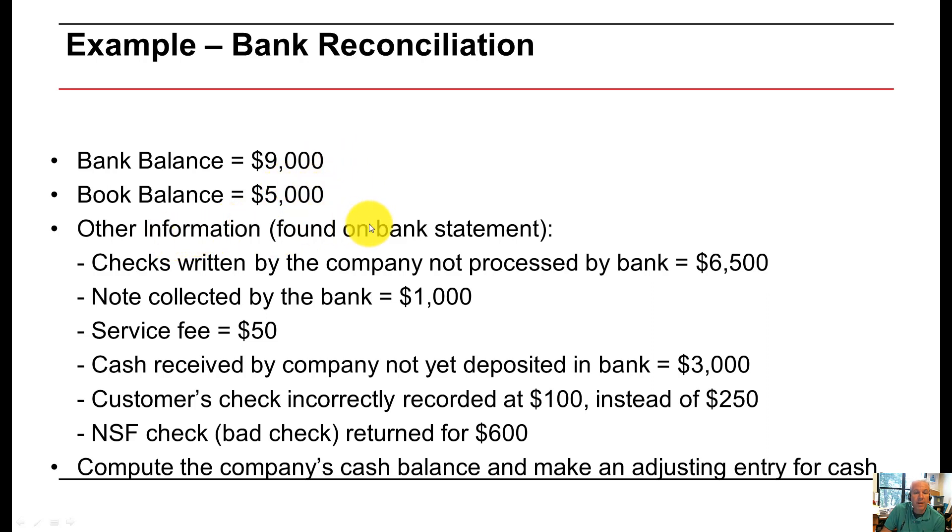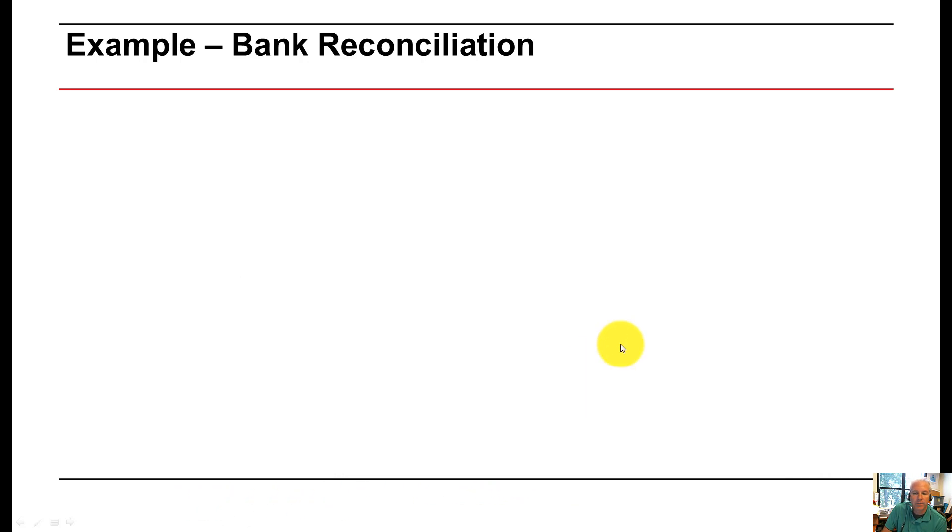Other information that we found on the bank statement are that we found that there are checks written by the company, not processed by the bank. How about a note collected by the bank for $1,000? Service fees, cash received by the company not yet deposited in the bank. And then customer's checks incorrectly recorded at 100 instead of 250. NSF check, bad check, returned for $600. Let's compute the company's cash balance and make an adjusting entry.